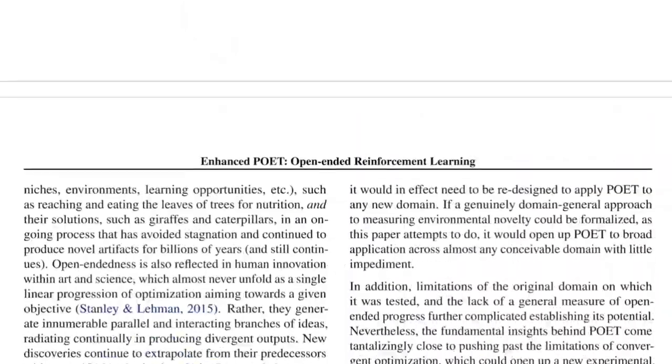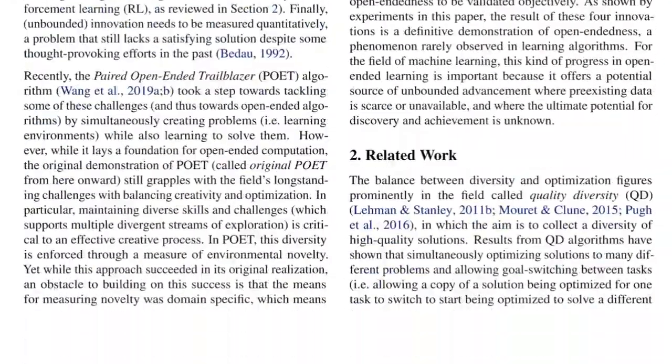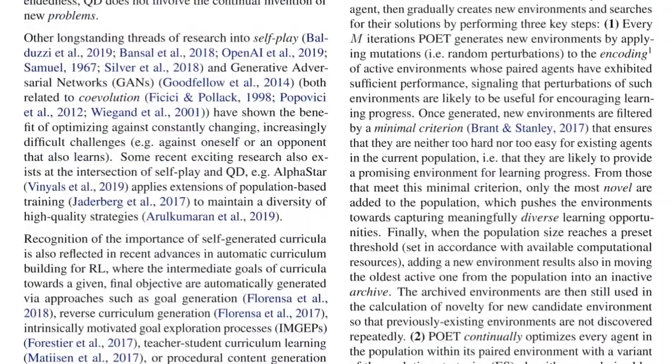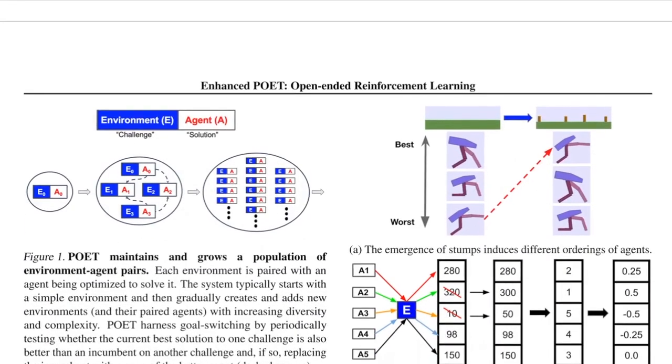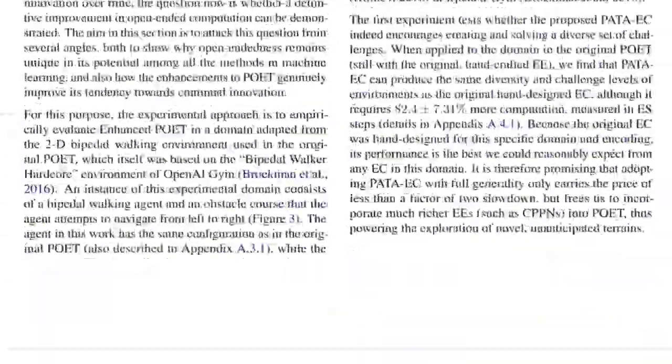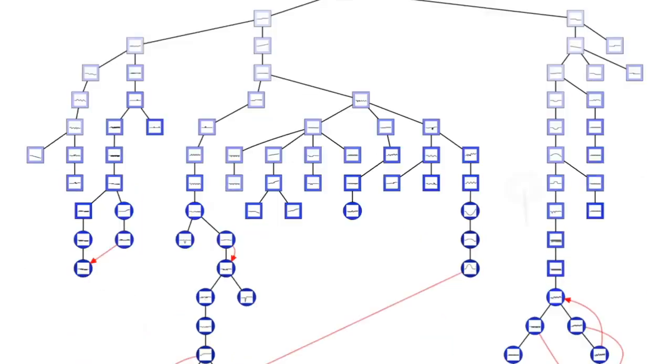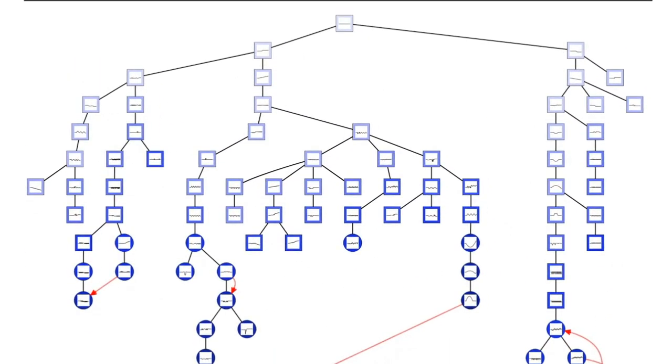So we'll jump right in. They make a number of improvements to the original Poet and I want to discuss the most important ones. They have a nice graphic of what happens in Poet. Poet builds up this tree of environments and to each environment it has an agent that it trains to solve that environment. It will continuously generate offspring and continuously train agents in each environment to solve it while producing more and more offspring.